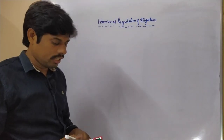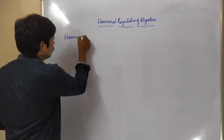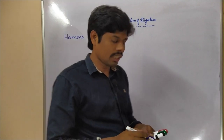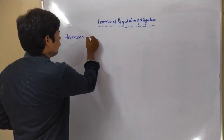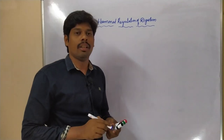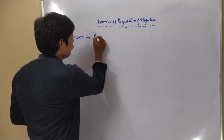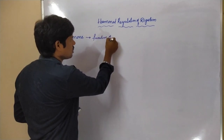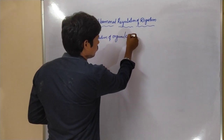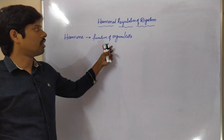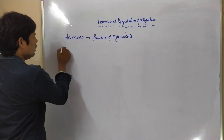So let us see initially what is a hormone. Hormones are the chemical messengers; they act on the different organs and different cells of the human body, and they stimulate the function of organs or cells.